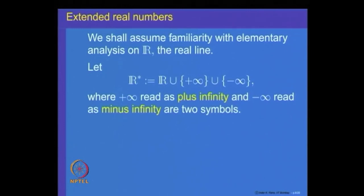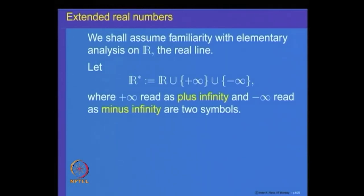What is the set of extended real numbers? The set of extended real numbers, denoted R*, is the set of real numbers to which we adjoin two new symbols: plus infinity and minus infinity. Once we adjoin these two new symbols to R, we get the extended set denoted R*. Since real numbers have algebraic operations of addition, multiplication, and an order, we need to define how these two new objects behave with respect to those operations.